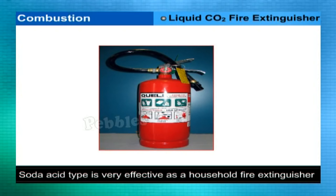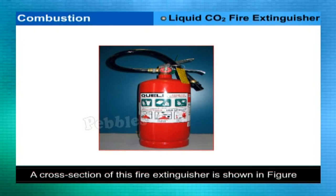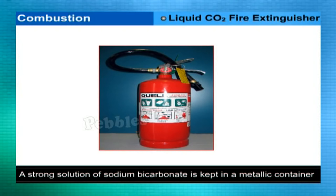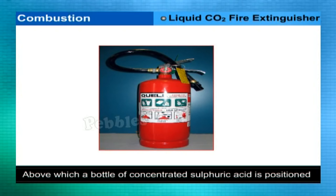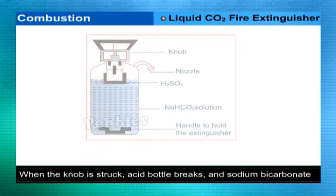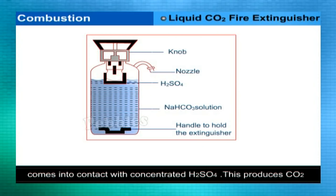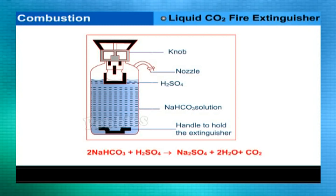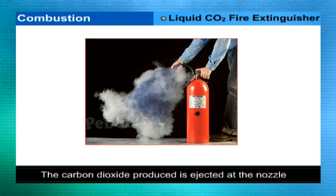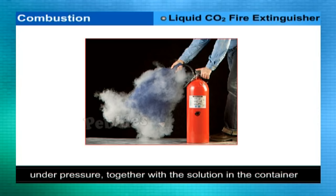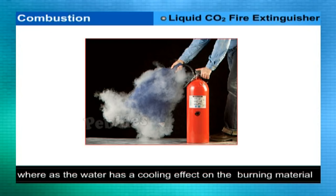The soda acid type fire extinguisher is very effective as a household fire extinguisher. A strong solution of sodium bicarbonate is kept in a metallic container, just above which a bottle of concentrated sulfuric acid is positioned. When the knob is struck, the acid bottle breaks and the sodium bicarbonate solution comes into contact with the concentrated sulfuric acid, producing CO₂: 2NaHCO₃ + H₂SO₄ → Na₂SO₄ + 2H₂O + CO₂. The carbon dioxide produced is ejected at the nozzle under pressure. The CO₂ smothers the flame, whereas the water from the NaHCO₃ solution has a cooling effect on the burning material.